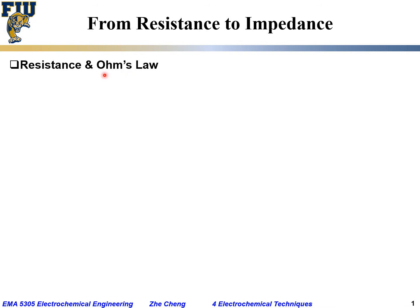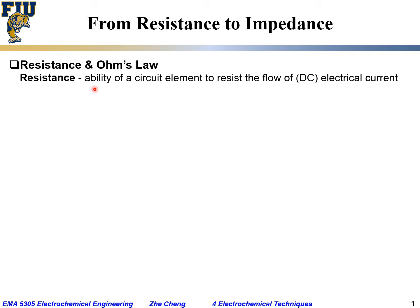From what we learned in physics, we know resistance and we know Ohm's law. Resistance is the ability of a circuit element, or sometimes the entire circuit, to resist the flow of electrical current — specifically for DC electrical current. Ohm's law states that resistance is the ratio of voltage divided by current, which is particularly the case for DC.